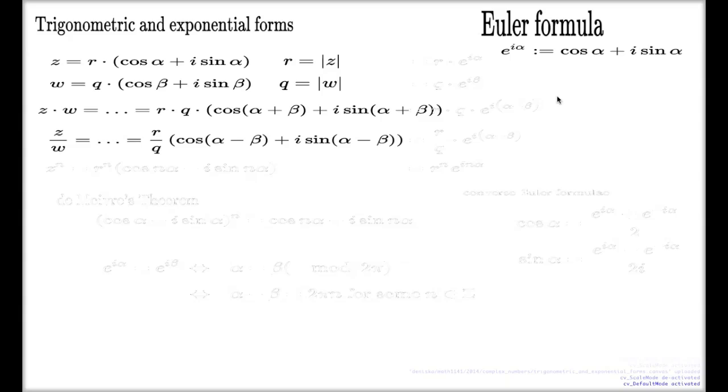And that's how actually the exponential form of the complex numbers comes about, because now you can abbreviate everything I wrote here with the exponential forms like this. This will be the exponential form for the z number. This will be the exponential form for the w number. And now when you multiply them in exponential forms, it is simply the product of moduli and sum of the arguments. When you quotient them, it will be the quotient of moduli and difference of the arguments.